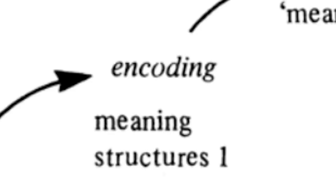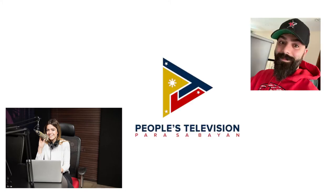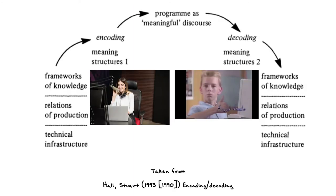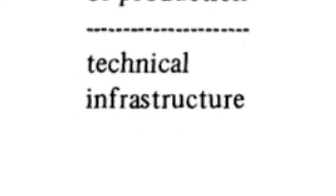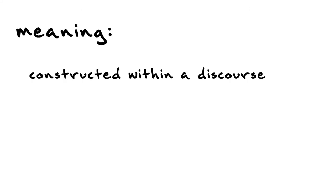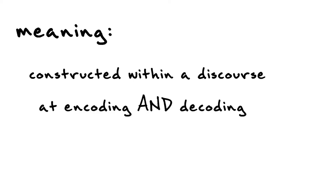What's the difference? On the side of encoding, the encoder is the broadcaster, the media company, the content creator. On the side of decoding, the decoder is the audience, the viewer, the reader, the consumer. These two entities have totally different discourses, even though they're both made up of frameworks of knowledge, relations of production, and technical infrastructure. Essentially, what Hall is getting at is that meaning is constructed within a discourse at both ends of the process.